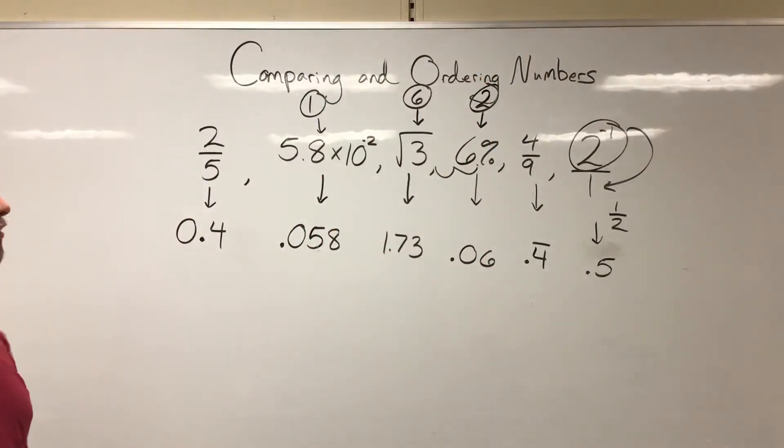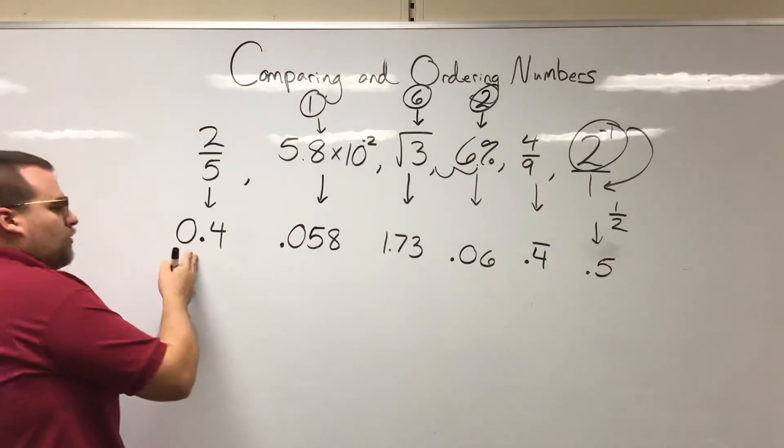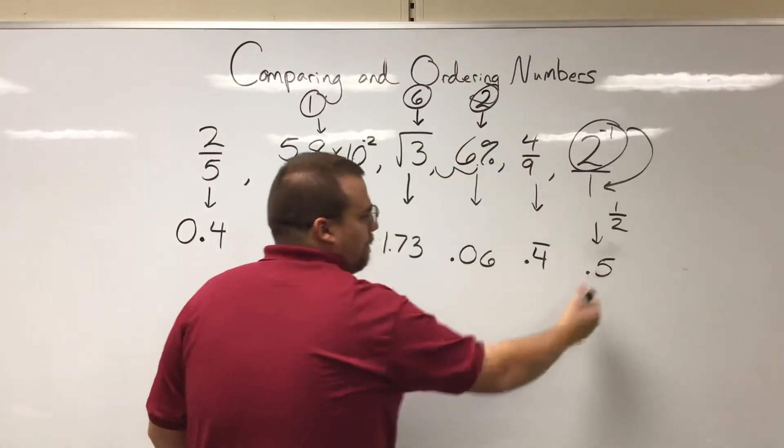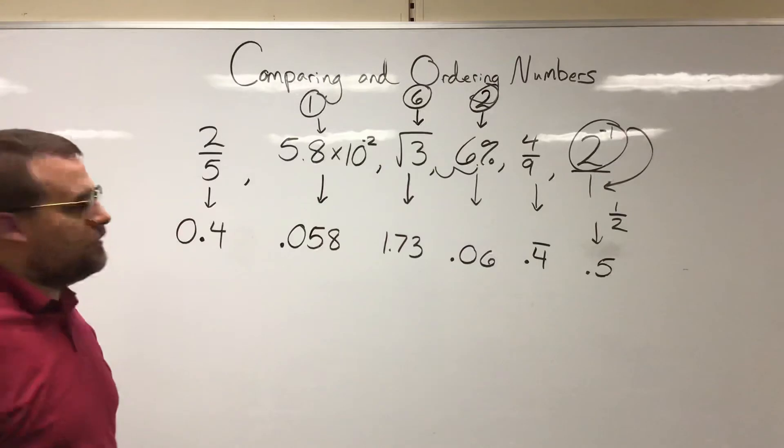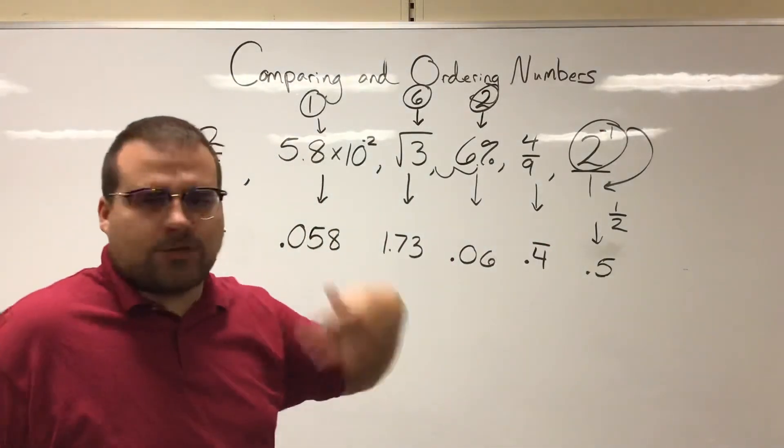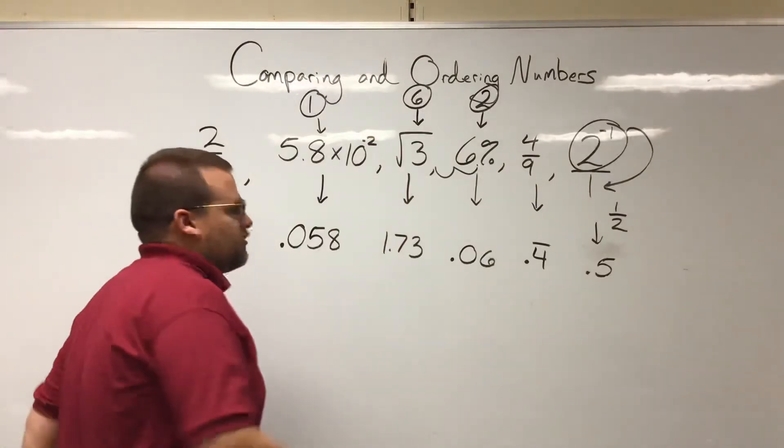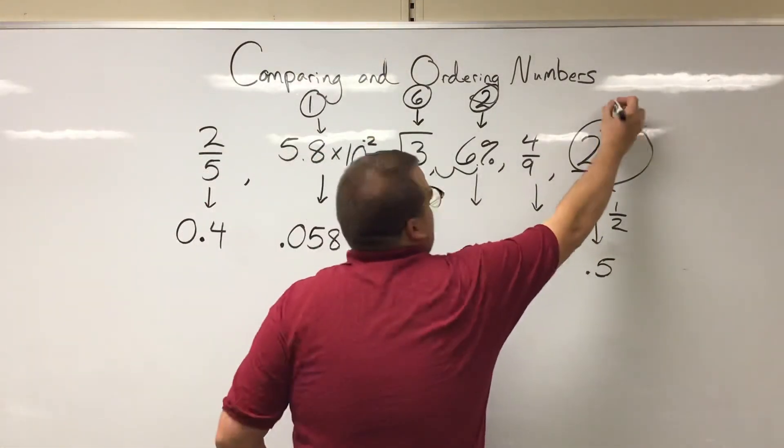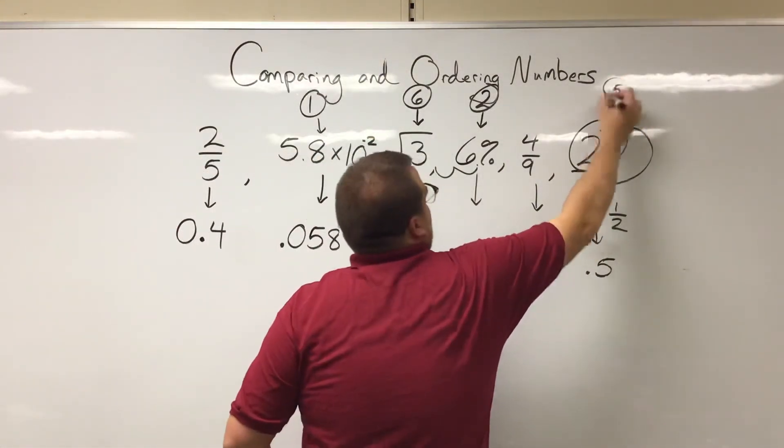Now we have a couple left. 0.4, 0.4 repeating and 0.5. Well, we can tell 0.5 is going to be bigger than either of those, right? That's just logic. Those start with a four. This one starts with a five. It's bigger. So that's going to be in our fifth place.